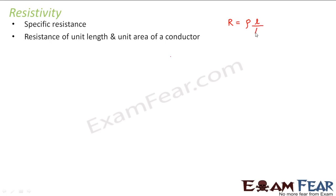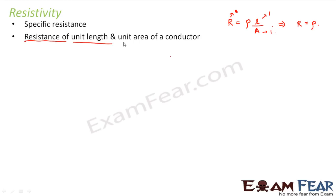We saw that resistance R = ρl/A. Now if we put length as 1 and area as 1, we get R = ρ. So resistivity is nothing but the resistance of unit length and unit area of a conductor. When the length of the conductor is 1 and the area is 1, then resistivity equals the resistance. We can define resistivity as the resistance of unit length and unit area of a conductor.